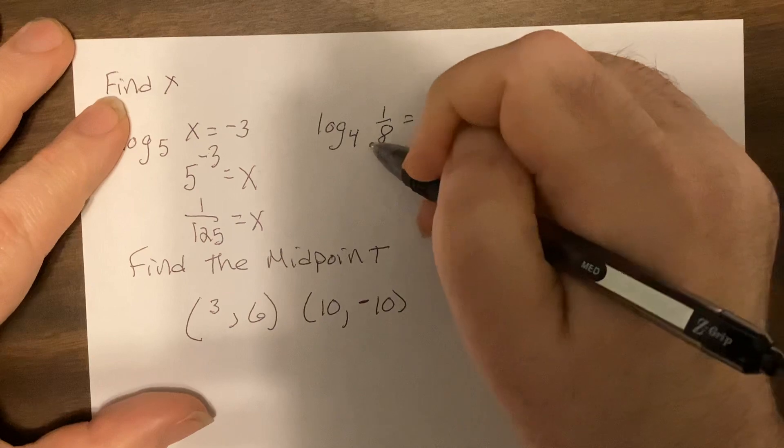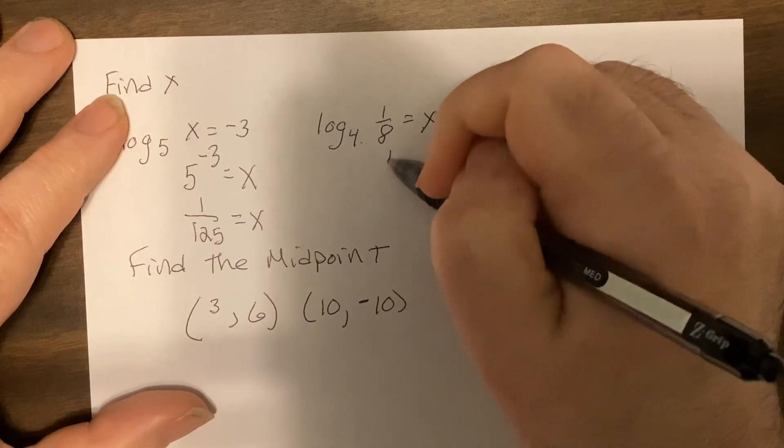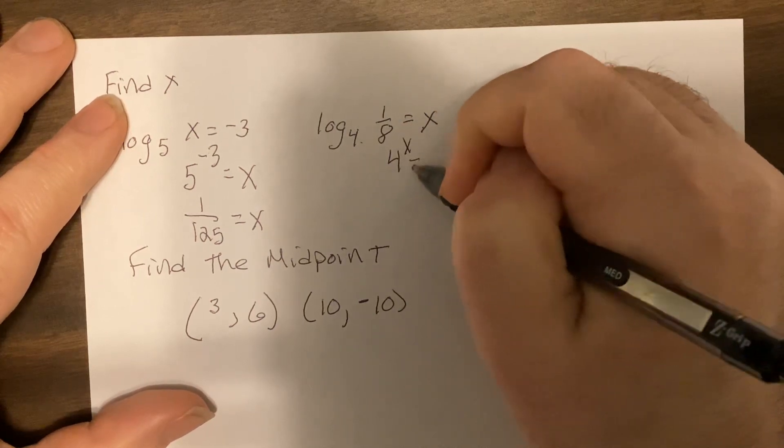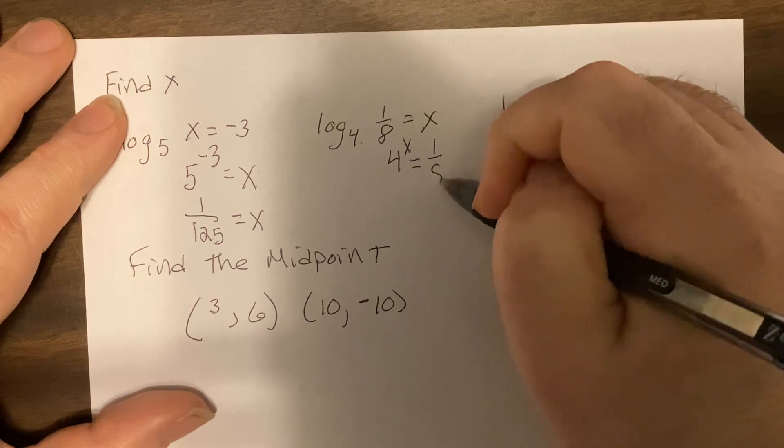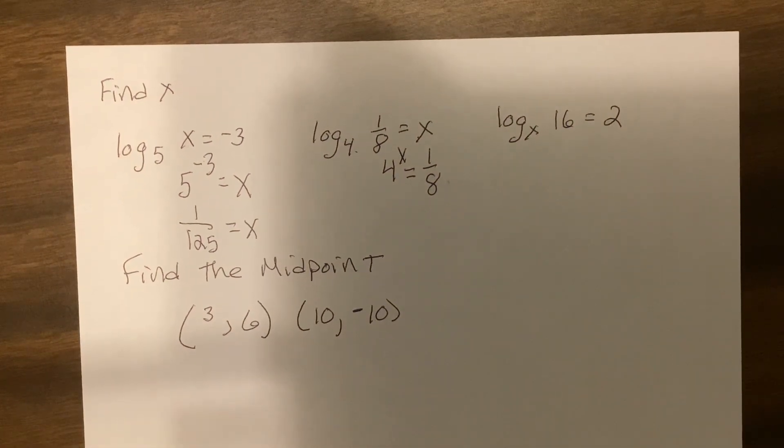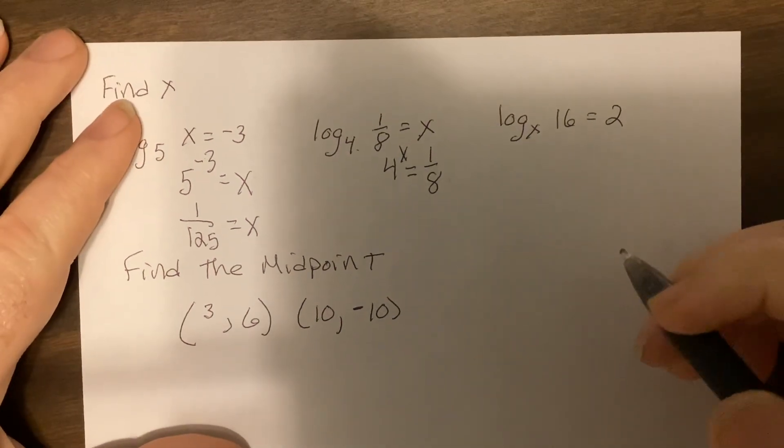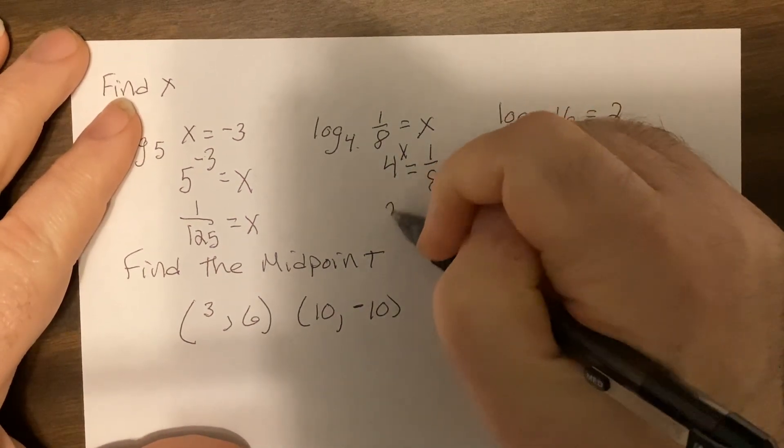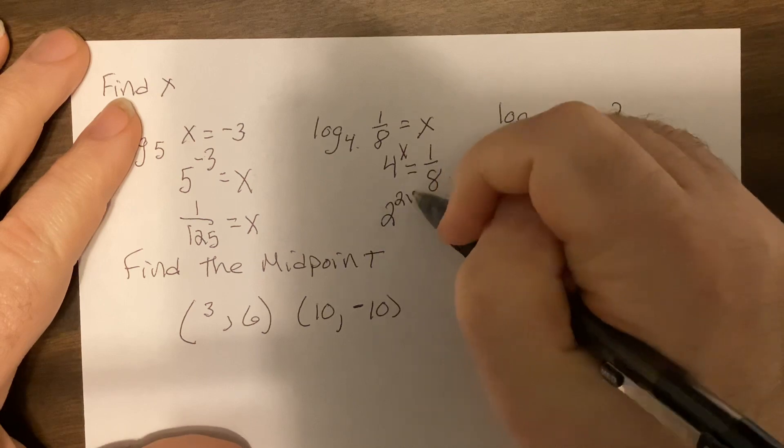This one: four to the x equals one over eight. So I want to get common bases on both sides, so I'm going to rewrite with the base of two. So this would be two to the two x.